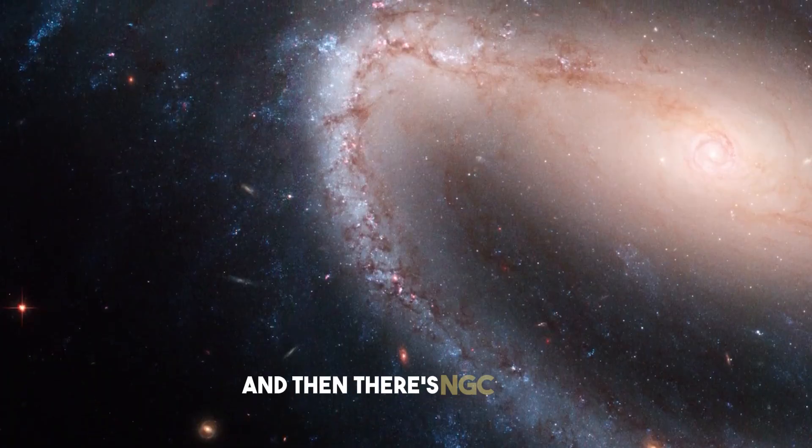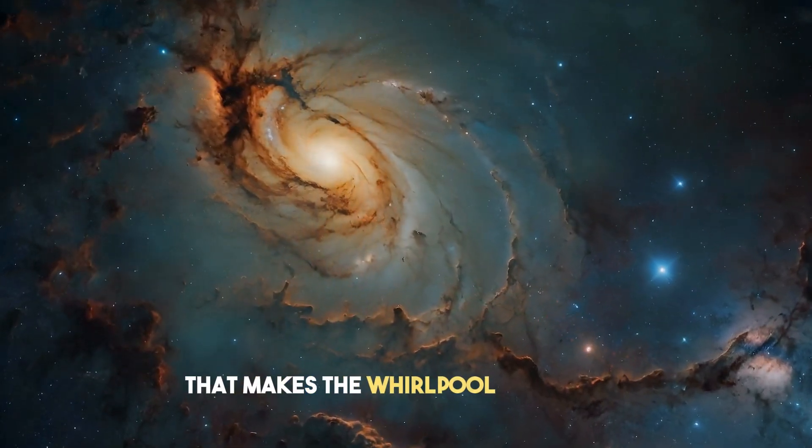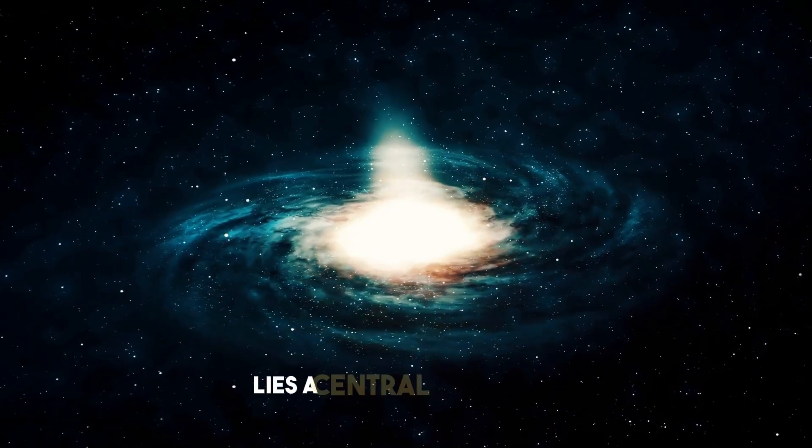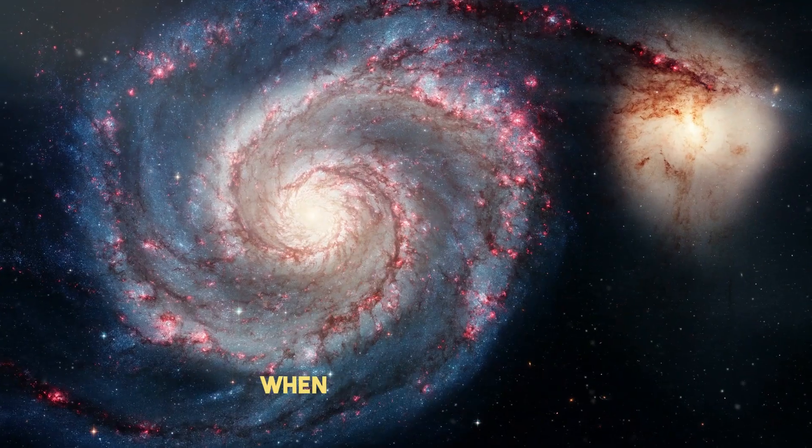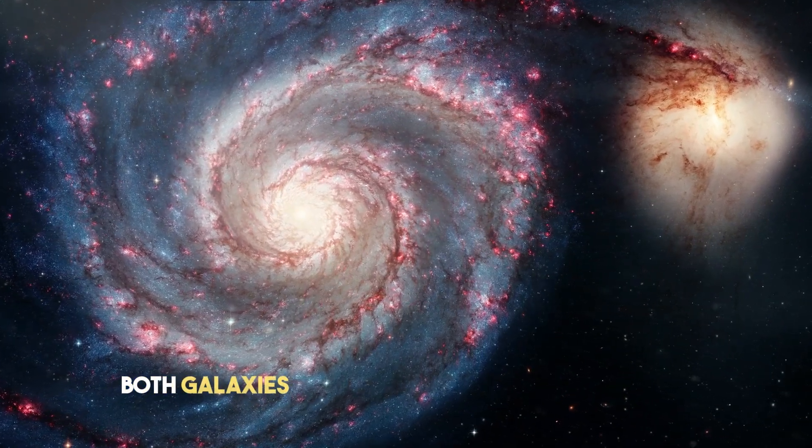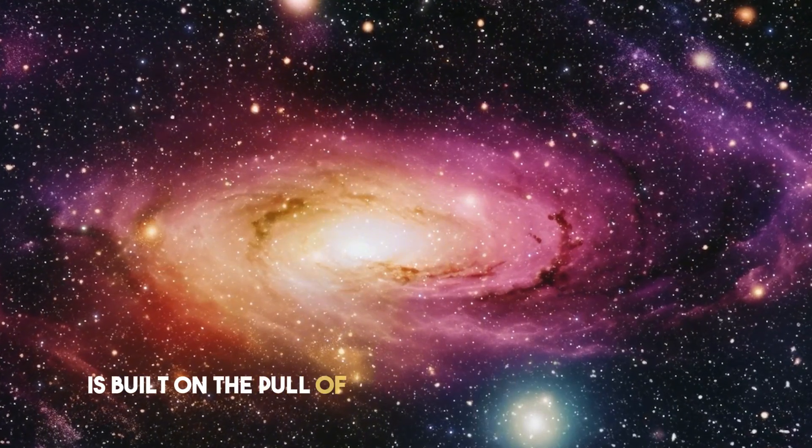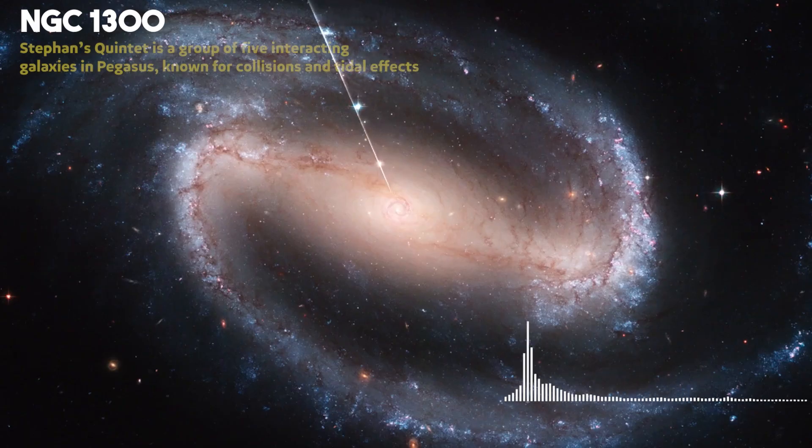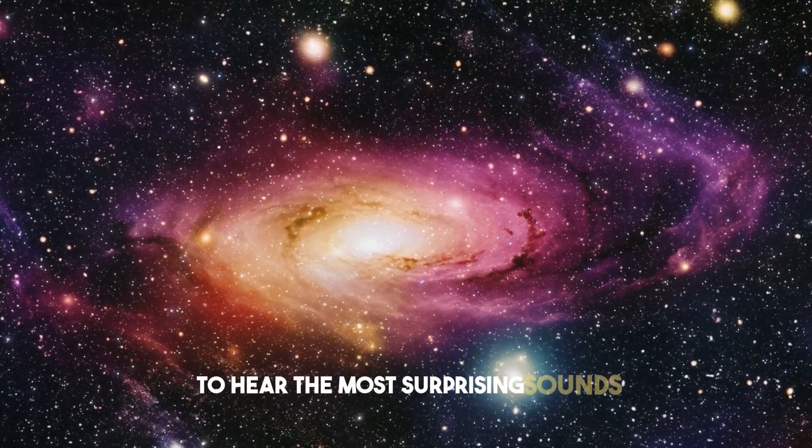And then there's NGC1300, another barred spiral that makes the whirlpool look tame. Its arms curl out like claws and right in the middle of that bar lies a central black hole so massive it organizes the entire galaxy around it. When turned into sound, both galaxies reveal the same unsettling truth. The beauty of spirals is built on the pull of something that only consumes. Make sure you watch this video all the way to the end to hear the most surprising sounds.